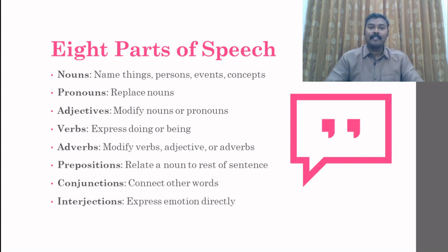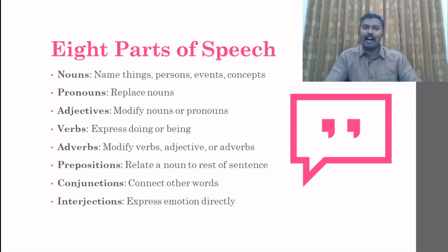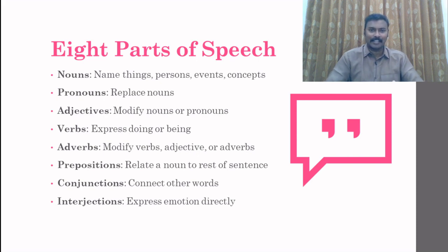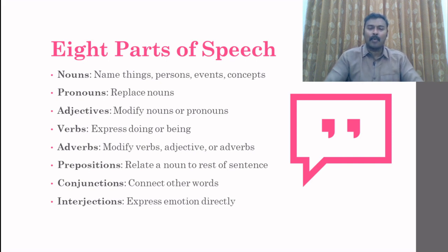The next category is the action word: verb. Verb expresses action — of being or doing. Just being is also an action and doing is also an action. Any action is represented through the verb, and it is the main component of any sentence. A sentence becomes active only because of the presence of a verb; without a verb, a sentence is incomplete.